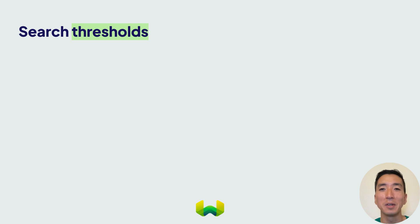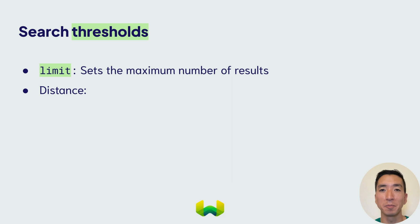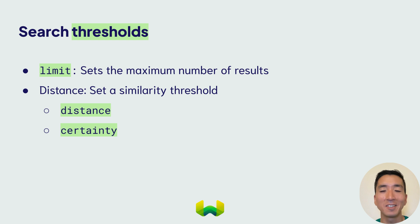To ensure that your vector search only returns relevant results, you'll need to set a threshold. You can do this using limit or distance thresholds. You've seen limit thresholds used already — this simply sets a maximum number of objects to be returned. On the other hand, a distance threshold specifies numerically how similar an object can be to the query before it'll be dropped from the result set. There are different ways to specify this threshold, either as a distance or a certainty.